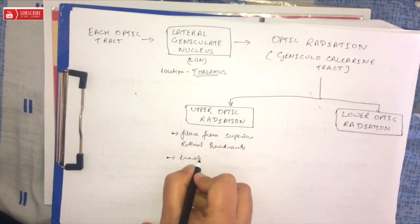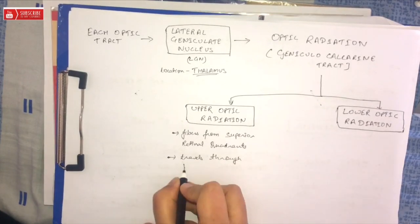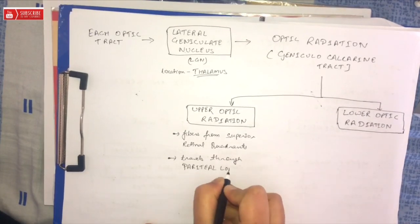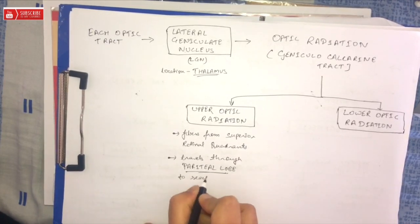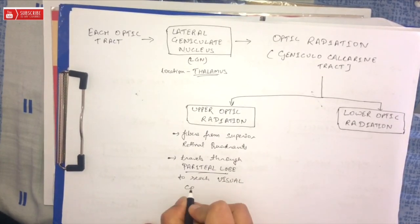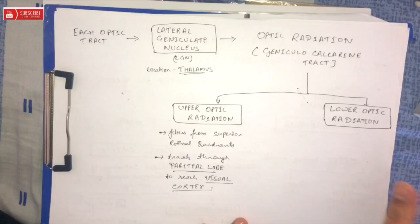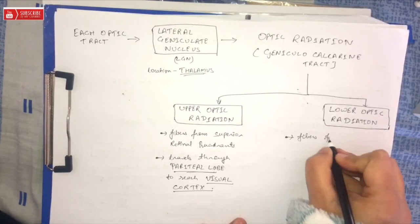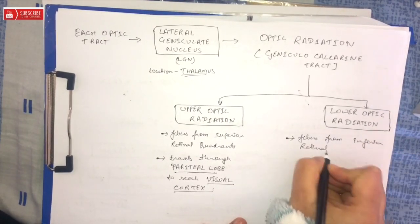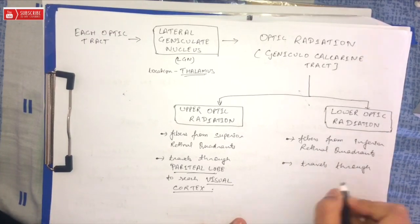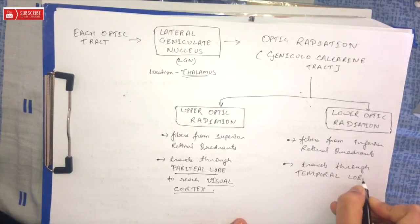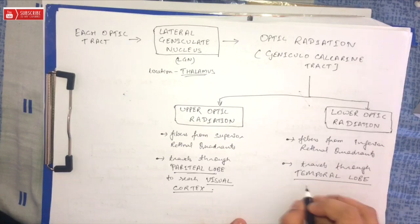These correspond to the inferior visual field quadrants. It travels through the parietal lobe to reach the visual cortex. Lower optic radiation carries fibers from the inferior retinal quadrants, corresponding to the superior visual field quadrants.